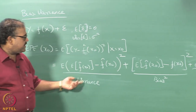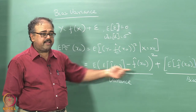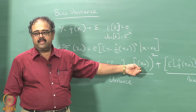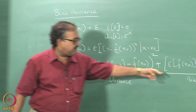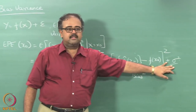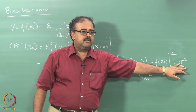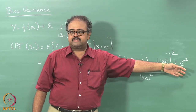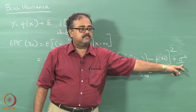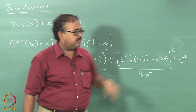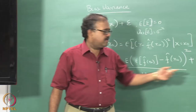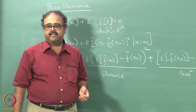The variance is essentially: given a specific instance of the training data, what is the expected error I am going to make. This is the bias, this is the variance. What about the sigma squared part? That is hopeless — regardless of how powerful your classifier is, you cannot get rid of sigma squared because that is an inherent noise in the data. There is nothing you can do about it. So now by choosing your classifier appropriately, you can trade off between the bias and the variance.